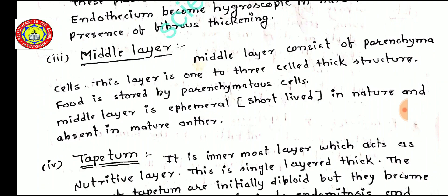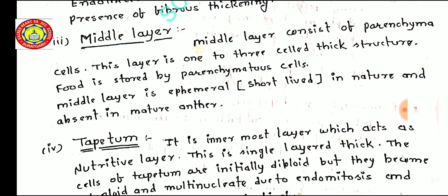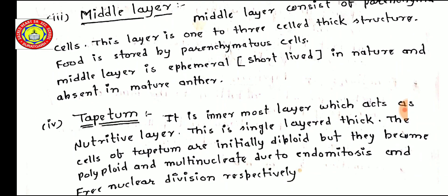The parenchyma cells store food material for the development of the pollen grain. The middle layer is ephemeral — short-lived in nature — and is absent in the mature anther. In the mature anther, the middle layer degenerates because the nutrition stored in it is consumed by the tapetum.